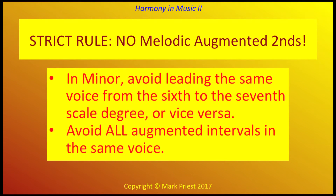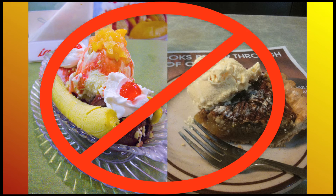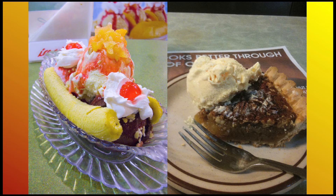Strict rule: when writing for voices in minor, we must not lead the same voice from the 6th to the 7th scale degree, or vice versa. In fact, we must avoid putting any successive augmented intervals in the same voice, especially when linking dissimilar chords. If you don't learn and apply this rule, there will be no dessert for you. Techniques we've already learned, such as contrary motion, will be useful here, and we will expand upon them next time.